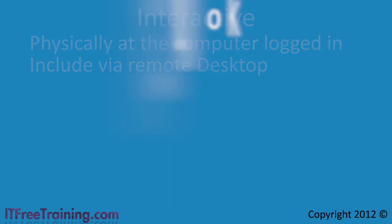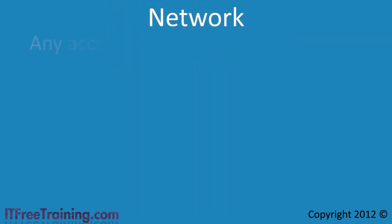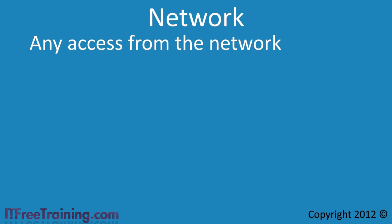The last of the special identities is network. If a connection is made over the network, for example to access a network share or perform remote administration, the user is automatically added to the network special identity. You can see that by using special identities, this gives you a lot more control than you would have using groups alone. Groups allow you to organize users, but there is no way to use groups to divide users up based on how they were authenticated and how they are accessing the computer.